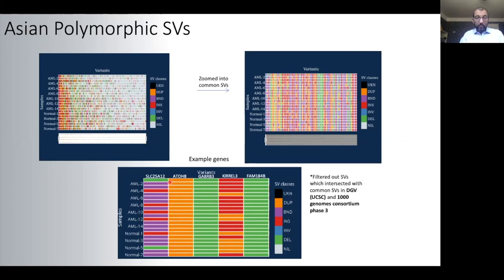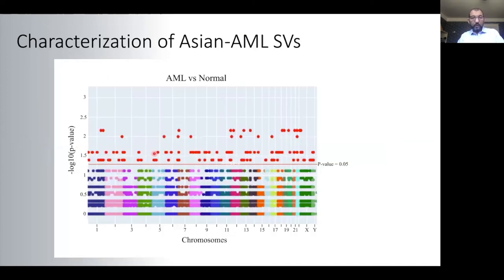Very interestingly, when we zoom only in genes, we do see structural variants that seem to be polymorphic structural variants in genes.